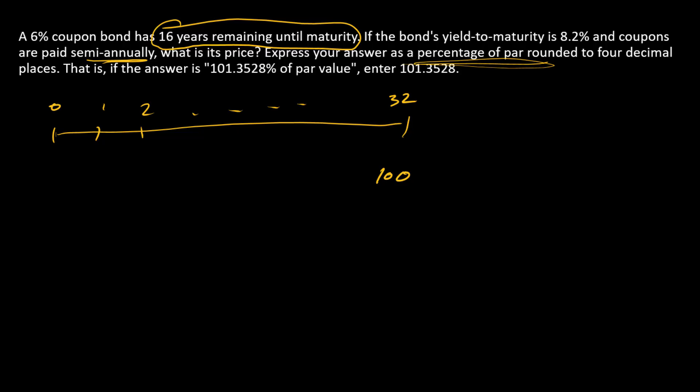And so what does that mean for the coupon? Well, the coupon annually is 6% of that. So 6% of 100 is just 6. That's going to be split into two payments of $3 each since we have semi-annual payments. So I'll put my threes here and find my appropriate discount rate and we'll be ready to go with our calculation.